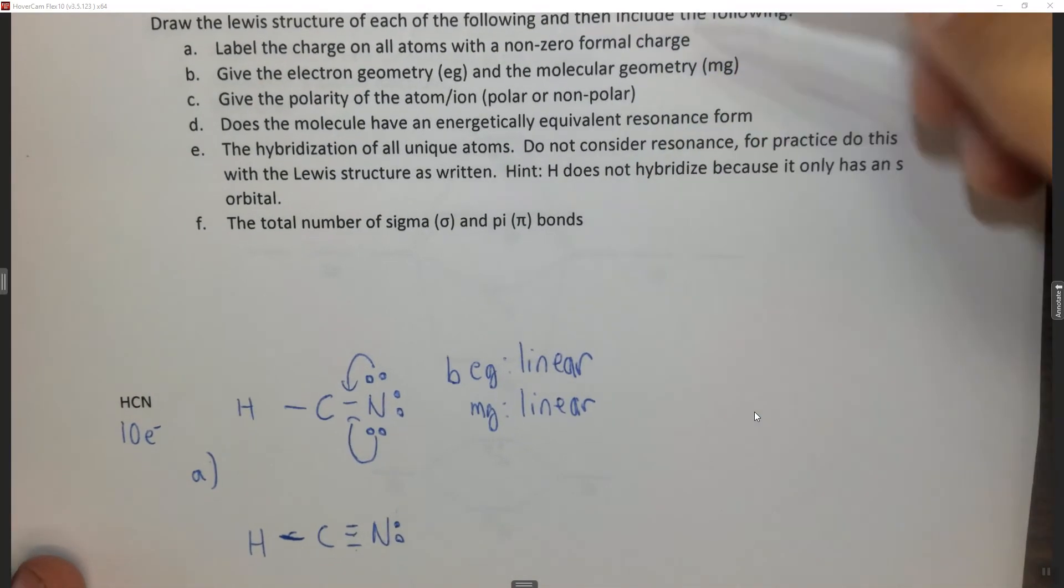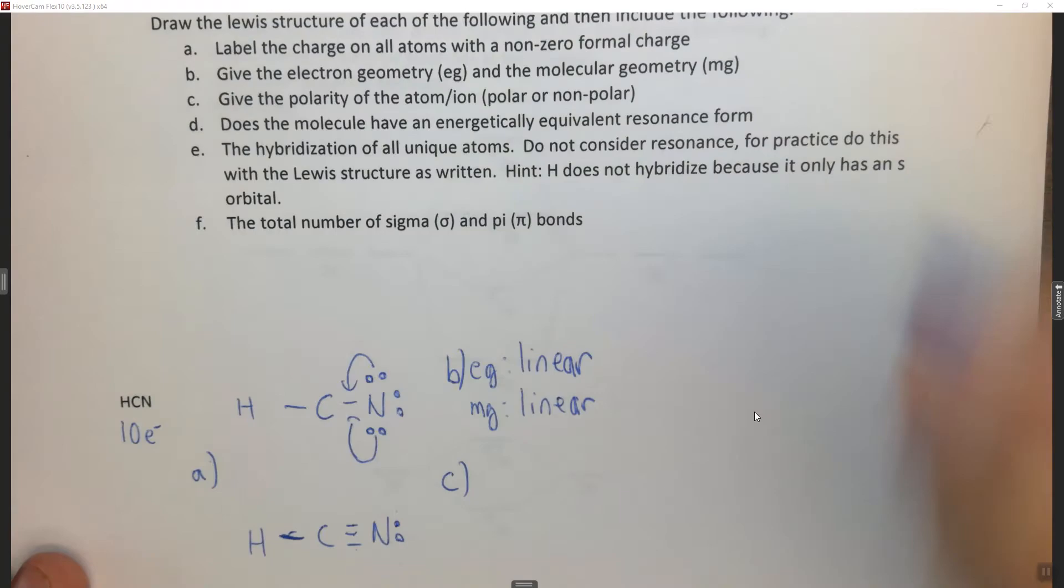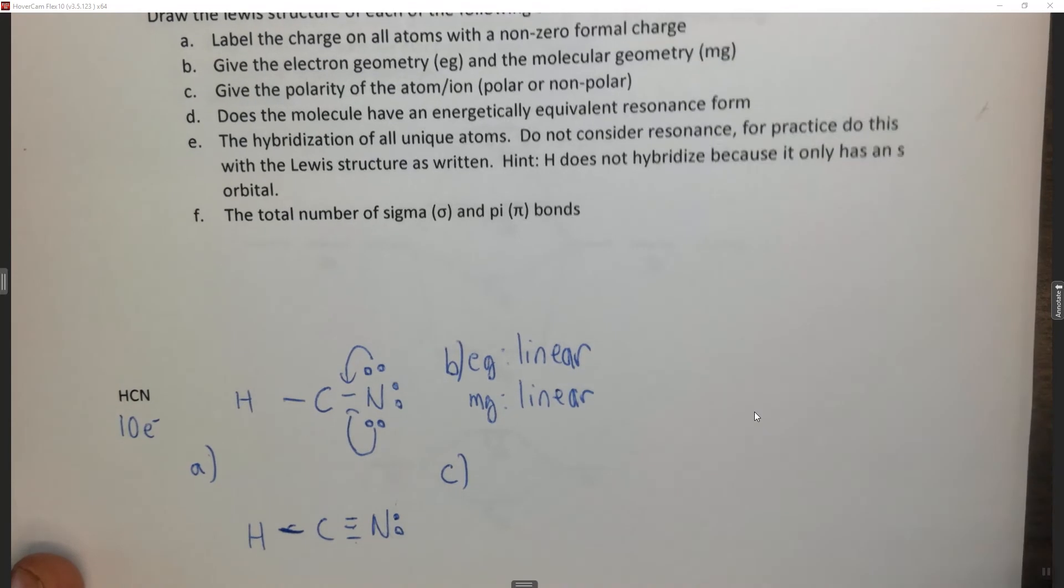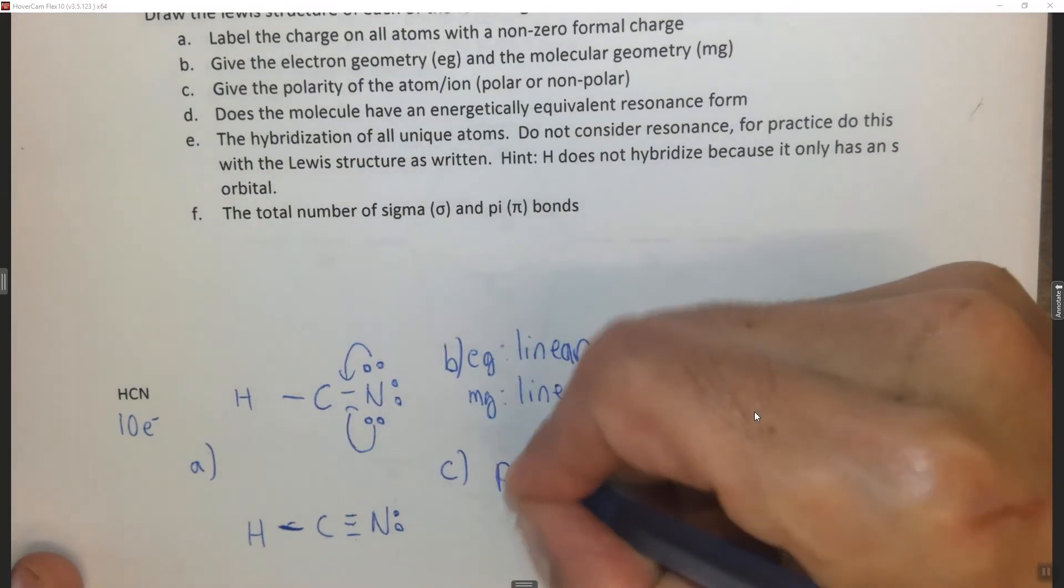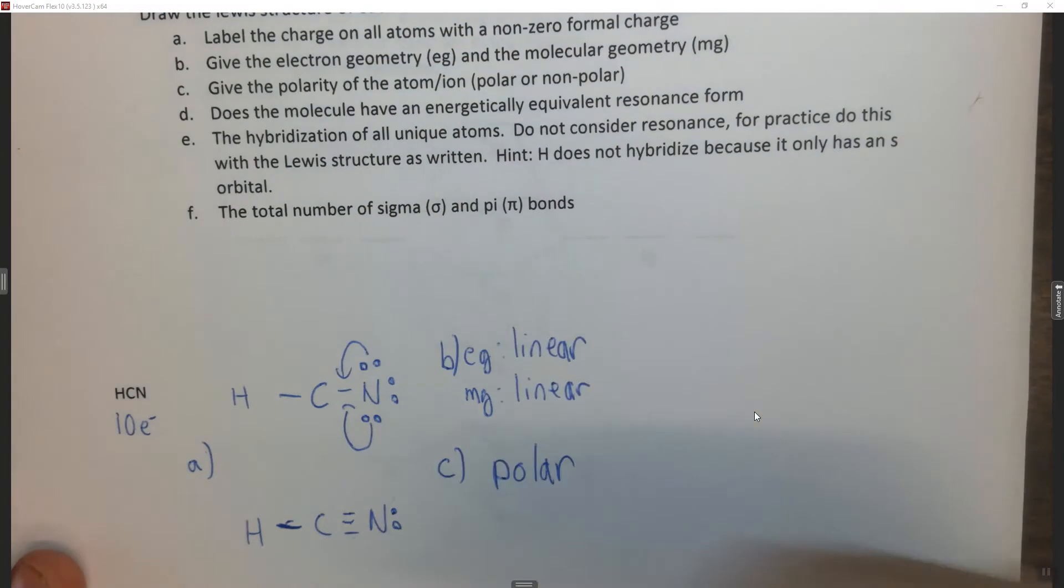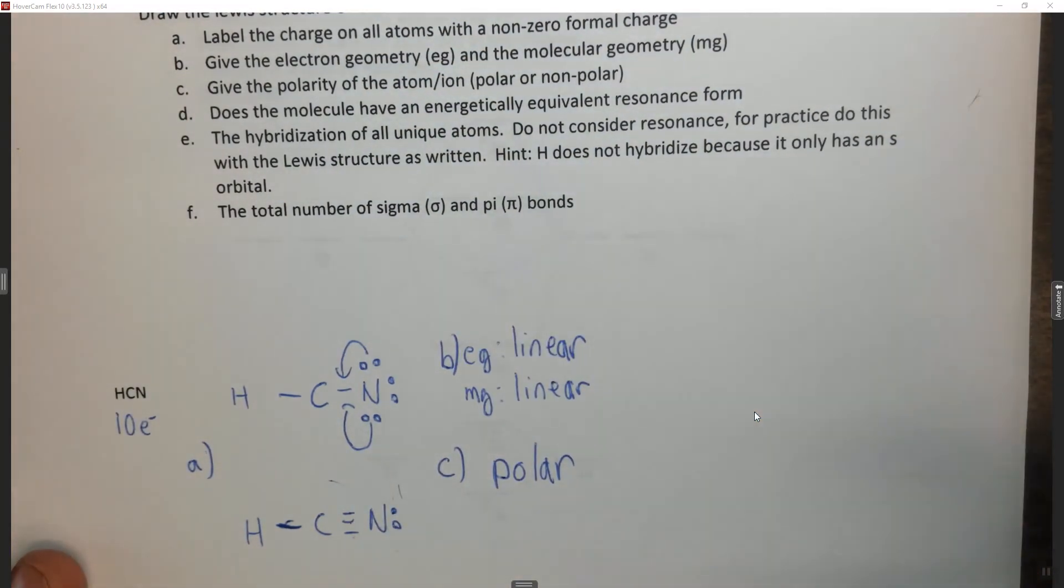C is to give the polarity of the atom. Alright, so in this case we have hydrogen on this side and nitrogen on this side. These are not the same. The domains are different, so therefore this is polar. The nitrogen is going to be able to pull electron density out in this direction because it's more electronegative than the hydrogen and carbon.